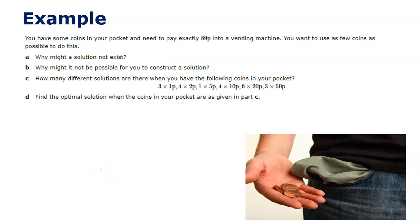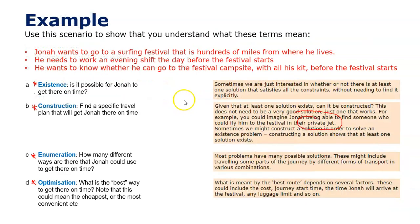Here's another question relating to these four ideas. You have some coins in your pocket and need to pay 89p in a vending machine — an old one where you insert coins. You want to use as few coins as possible. Why might a solution not exist? You might not have 89p at all — maybe only 20p — or you might only have pound coins and not the right change. This is an existence question.